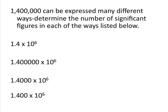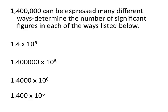Let's look at an example. 1,400,000 can be expressed many different ways. You'll want to express that number in scientific notation with the number of zeros that you want to designate as being significant. On this slide, I've listed four ways that we could write the number 1,400,000, each with a different number of significant figures.